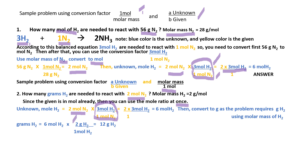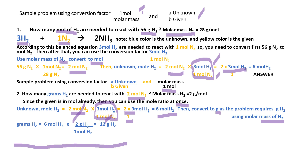Cancel the units. The equation is 2 times 3 moles of hydrogen divided by 1 equals 6 moles of hydrogen. Then convert this to grams as the problem requires using the molar mass of hydrogen. Grams of hydrogen equals 6 moles of hydrogen times the molar mass of hydrogen. Cancel mole hydrogen, and the equation is 6 times 2 divided by 1 equals 12 grams of hydrogen.